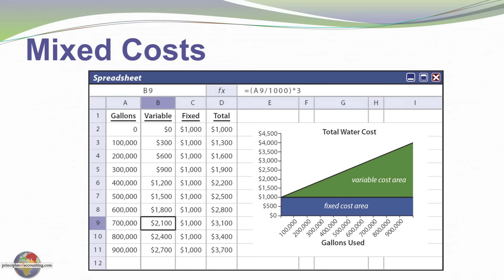And I've also plotted that to show the total water cost starting at $1,000 even if we use zero gallons. And then it goes up in a linear fashion for the variable cost as the usage continues to increase along the horizontal axis.